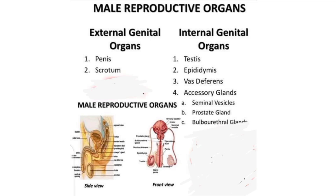The male reproductive system consists of organs that make up the reproductive and urinary system. In males we have external genital organs and internal genital organs. External genital organs are those outside the body, like the penis and scrotum. Internal genital organs are the testes, epididymis, vas deferens, accessory glands, seminal vesicles, prostate gland, and bulbourethral glands.